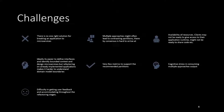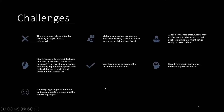We saw on the previous slide that there are many approaches that can be adopted to analyze and decompose a monolith to move towards a microservices architecture. However, each one of the approaches had their own set of limitations and it was not very clear that there is a clear winner or a clear-cut approach that can be adopted in a generalized manner. The challenges that industries and enterprises face are many — for one, there is no one right solution for breaking an application into microservices. The cognitive stress in consuming multiple approaches' output is very high.